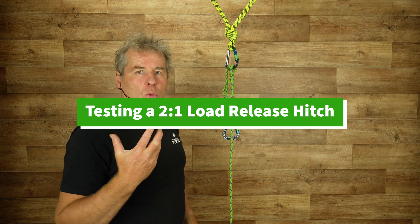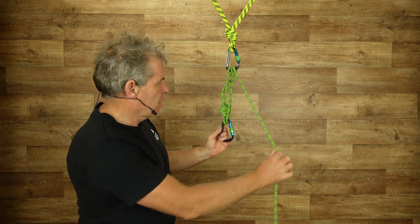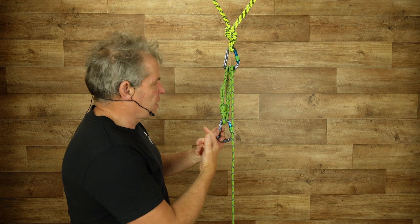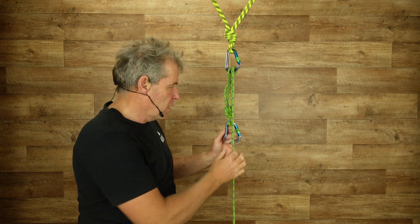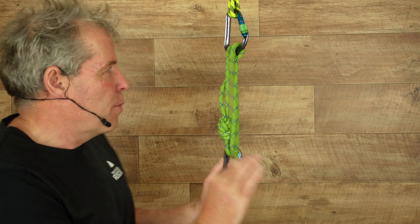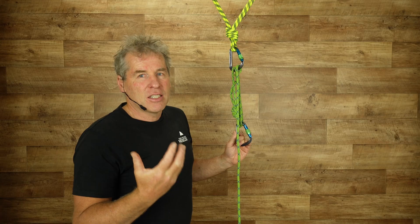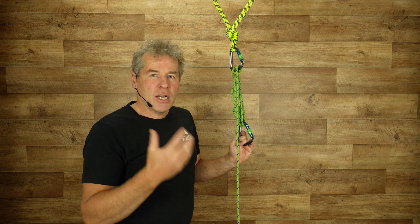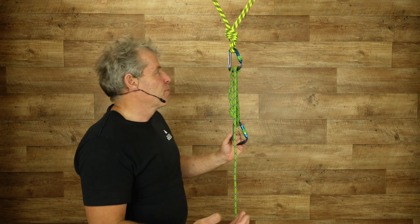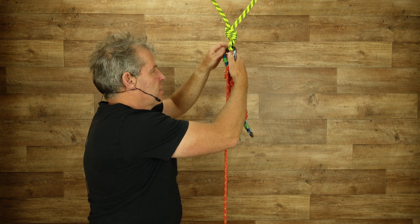In the past, what we've used for a load release hitch is this 3-to-1 with a change of direction. The problem with it, we've found it actually provides too much friction. And if this is an 8mm x 10m bit of cord, it only gives us about 2.5m of extension, which a lot of the time in a practical setting is not enough. So what we're looking at for this video is an alternative to that.